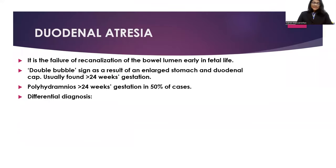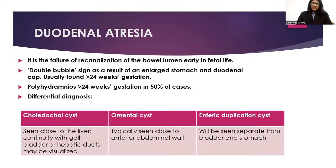Duodenal atresia is the failure of re-canalization of the duodenal bowel lumen in fetal life. The double bubble sign results from an enlarged stomach and duodenal cap, and is generally found after 24 weeks of gestation in association with polyhydramnios, which is found in over 50% of cases after 24 weeks. Differential diagnoses include choledochal cyst, seen closer to the liver and in continuity with the gallbladder or hepatic ducts; omental cyst, seen closer to the anterior abdominal wall; and enteric duplication cyst, seen separate from the bladder and stomach.